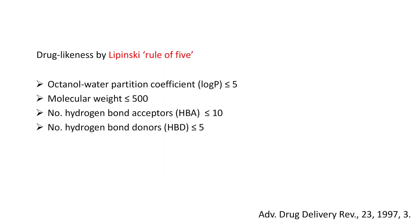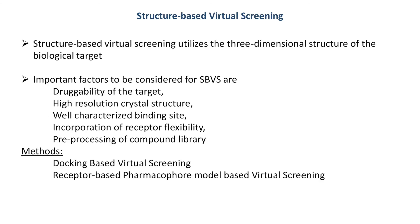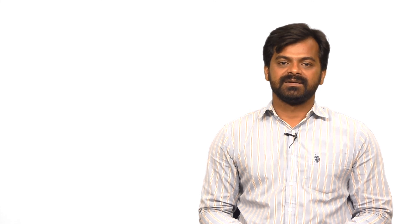There are various chemical databases available online, some in the public domain and some commercially available. As seen in the table, these are different chemical databases we can use for identification of hit compounds against a target protein. The most commonly used filter in virtual screening is Lipinski's Rule of Five, which defines the druggability of a novel chemical compound. The rules include: log P value less than or equal to 5, molecular weight less than or equal to 500 Daltons, number of hydrogen bond acceptors less than or equal to 10, and number of hydrogen bond donors less than or equal to 5. For structure-based virtual screening, we can use docking or receptor-based pharmacophore modeling. In one study, authors used a molecular docking approach to identify novel EGFR tyrosine kinase inhibitors. They used the crystal structure of EGFR kinase and screened the SPECS database containing around 200,000 compounds, identifying 43 hit compounds, of which 13 showed inhibition against EGFR tyrosine kinase.